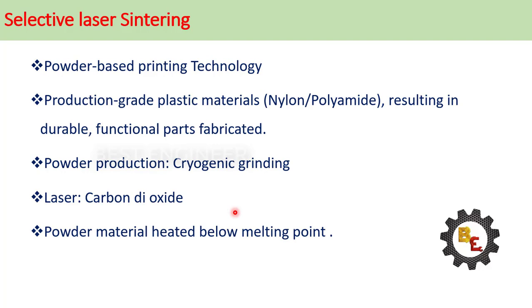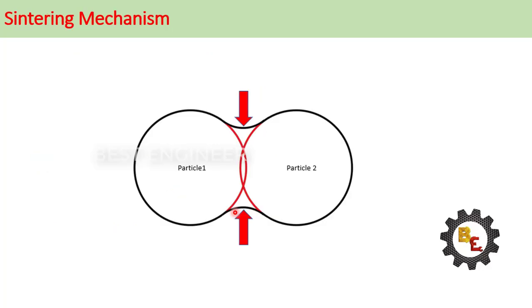Sintering mechanism: Initially, the powder will be spread over the building platform. The laser source will be passed over the powder particles. Due to this laser source, boundary of the powder particles gets micro melted, the viscosity is reduced and the neck is formed between the powder particles.